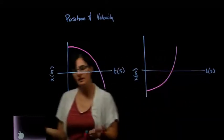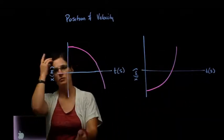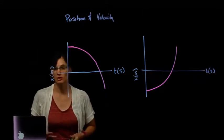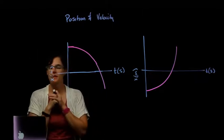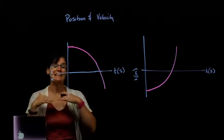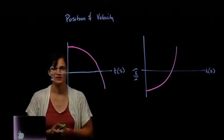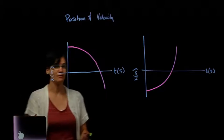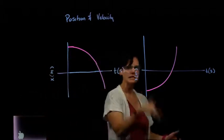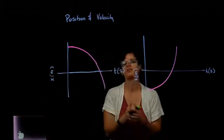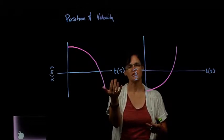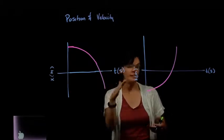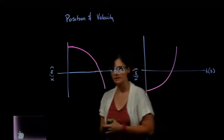In a previous mini-lecture, we looked at the relationship between position and velocity for constant motion — motion with a constant velocity — a linear graph on a position-time graph. We looked at both the mathematics of that, the average velocity, and the graphical analysis: going from a position-time graph that is a straight line to a velocity versus time graph.